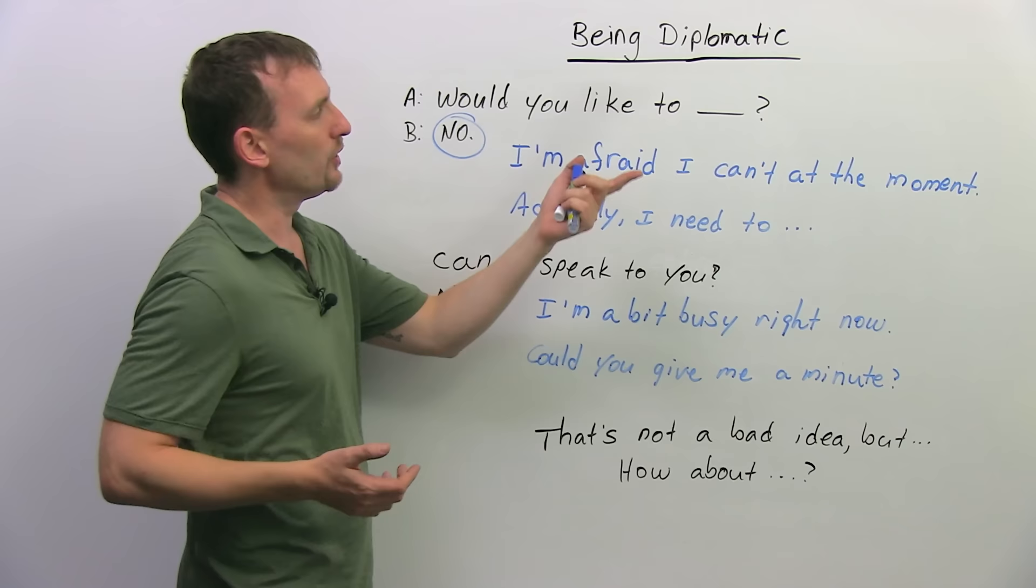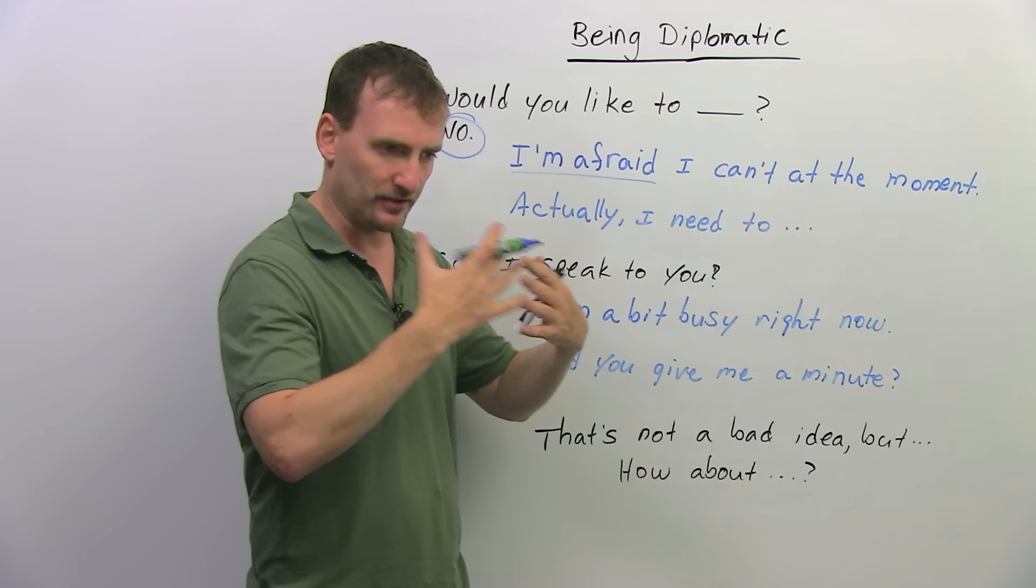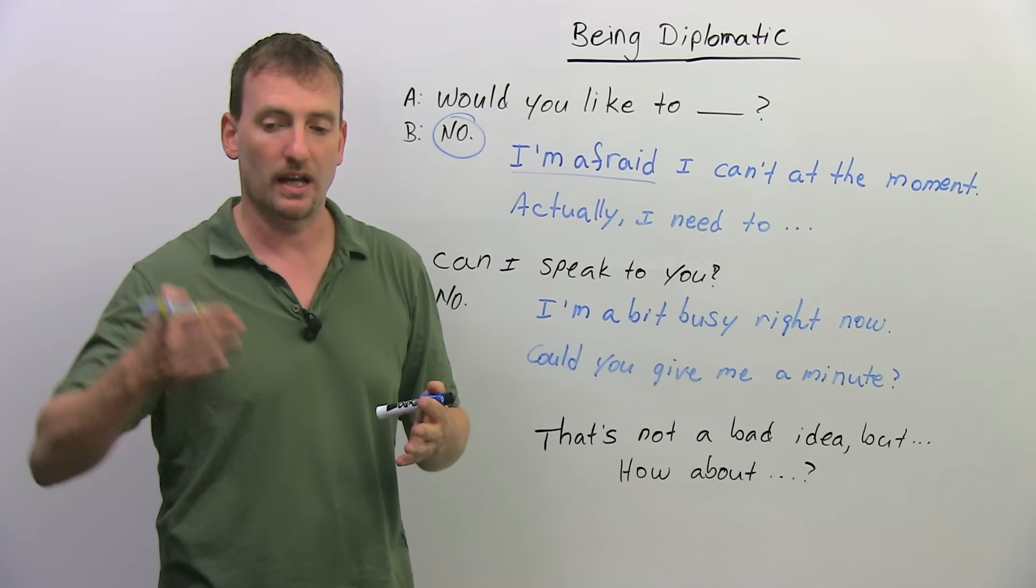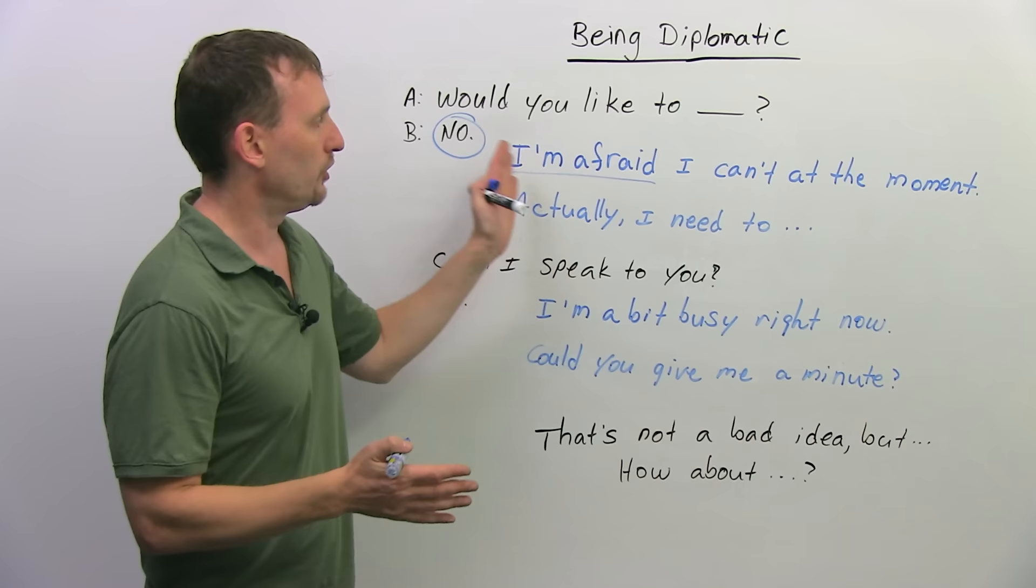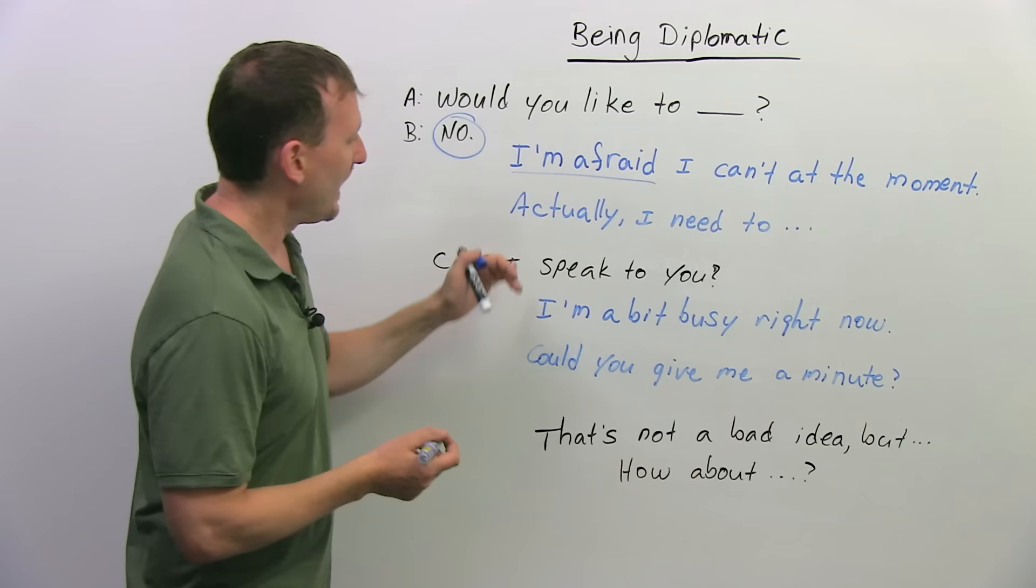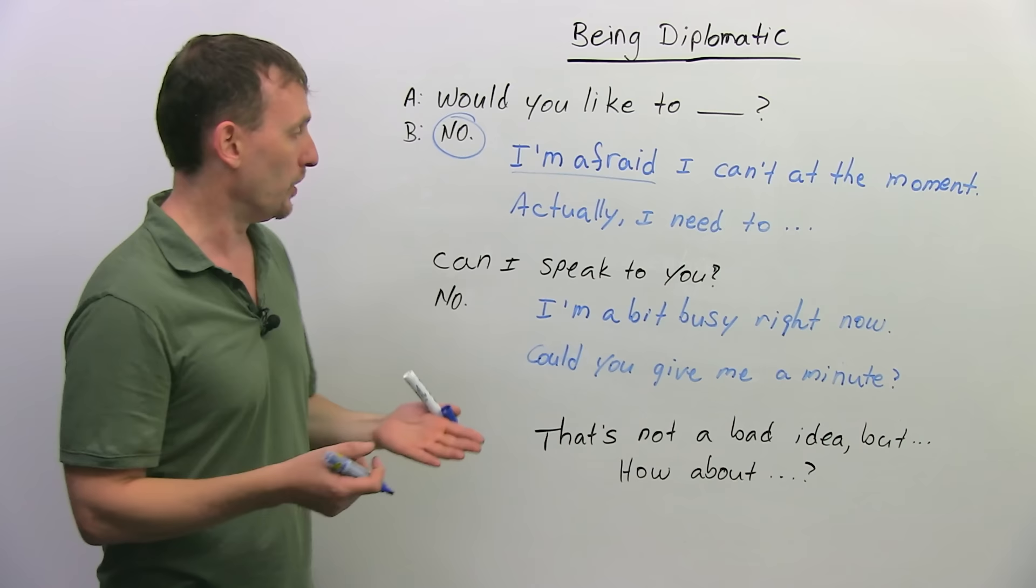Would you like to go out for a drink? I'm afraid I can't at the moment. I'm afraid, already softens, softens the whole thing, and then give a reason why right away. I'm sorry, I can't at the moment. I have to, whatever, finish a project. Ideally, always give an excuse or give a reason, but don't say no. I just can't at the moment. I'm busy, whatever. Actually, I need to do something else, right? So, I can't do whatever it is you'd like me to do. Better than saying no. Same with, can I speak to you? No. Okay. Bye. Right? That's the kind of feeling people have when you say no.